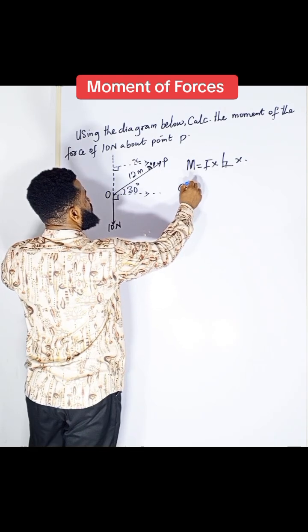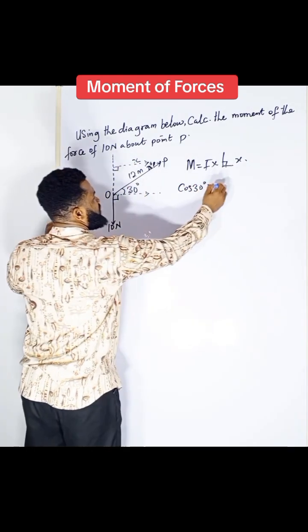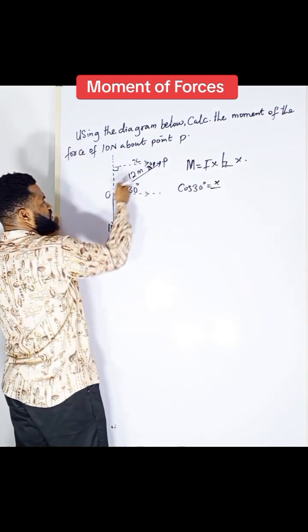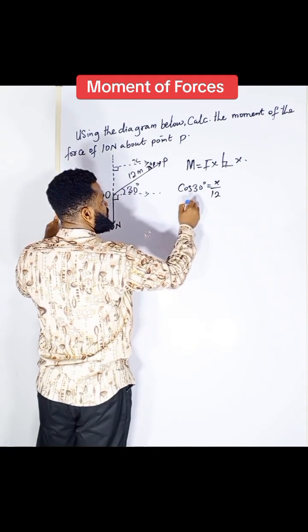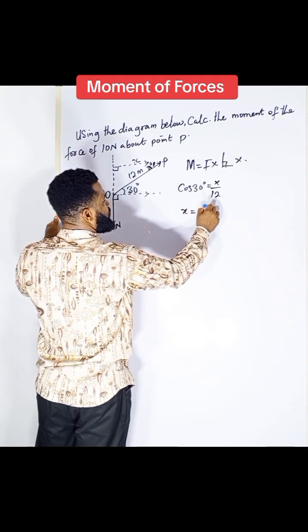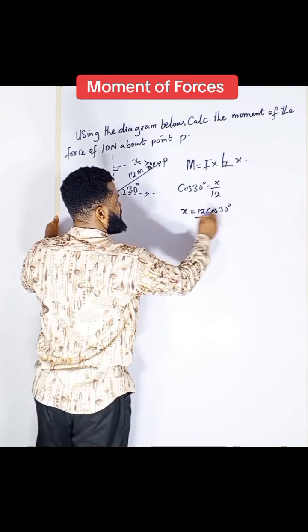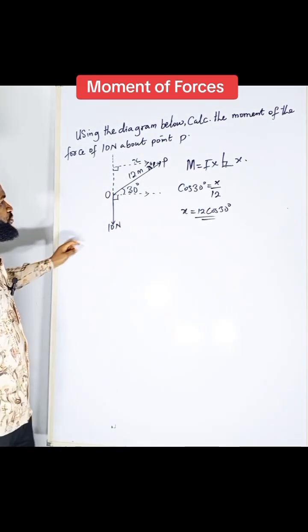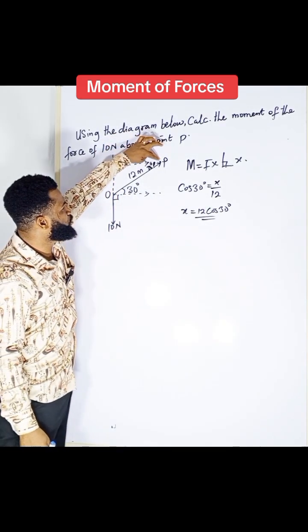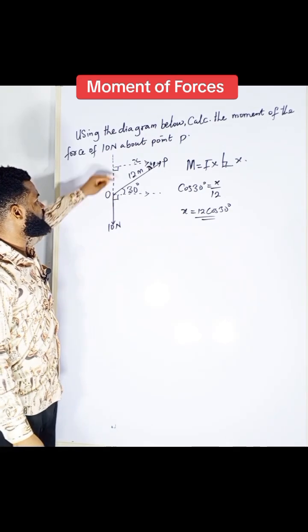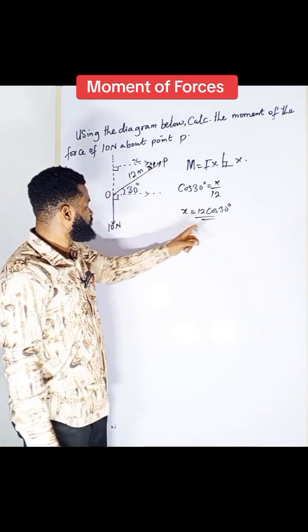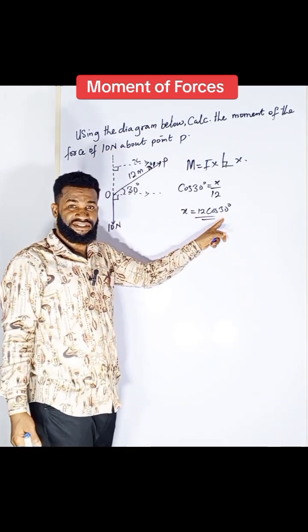So, cos 30 is equal to adjacent, which is x. Hypotenuse, which is this one, which is 12. Therefore, x is equal to 12 cos 30. So, this is the direction from this turning point to the line of action is given as x. And this x is 12 cos theta, cos 30.